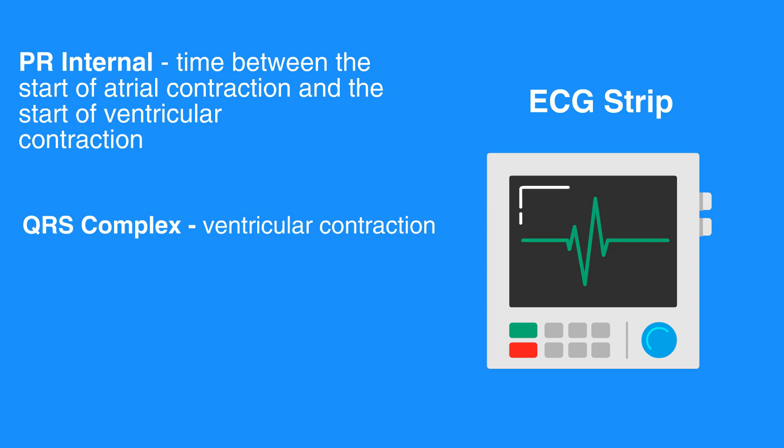Following ventricular contraction, the ventricles rest and repolarize, which registers as the T wave. The atria also repolarize, but this coincides with the QRS complex; therefore, it cannot be observed on the ECG strip.